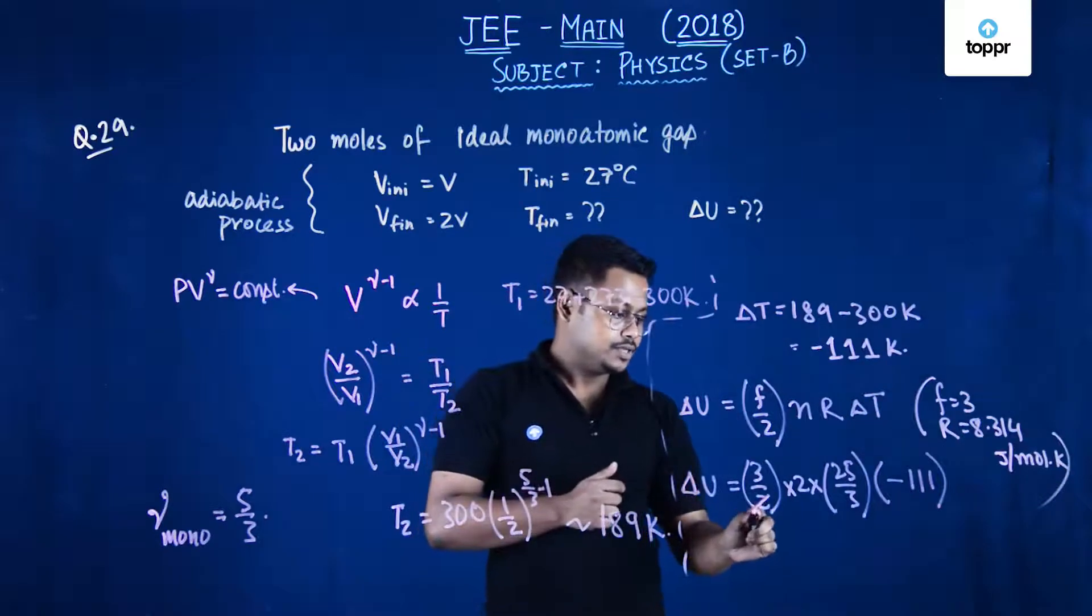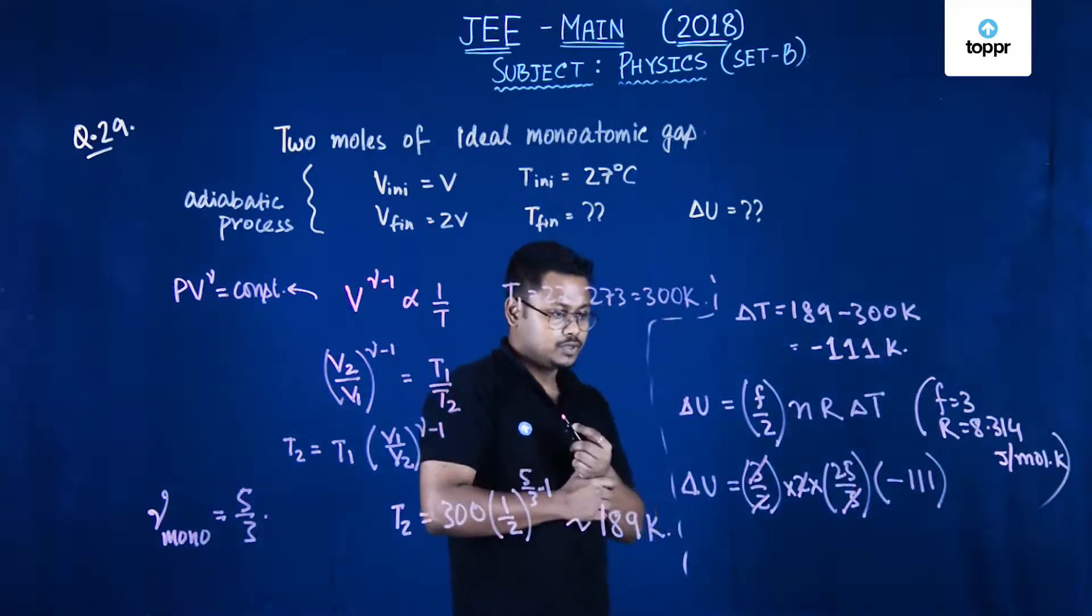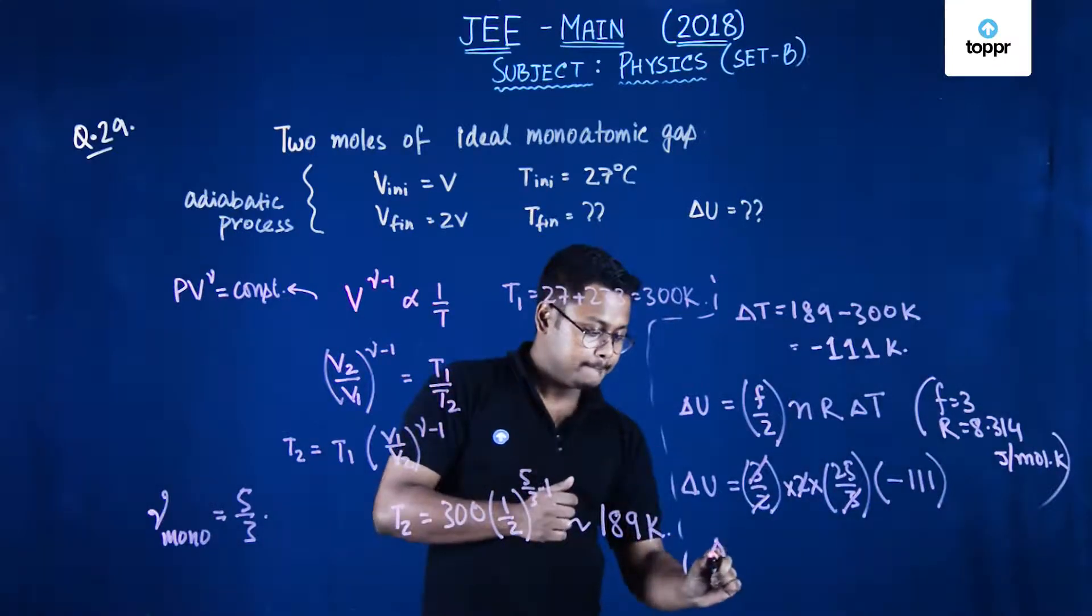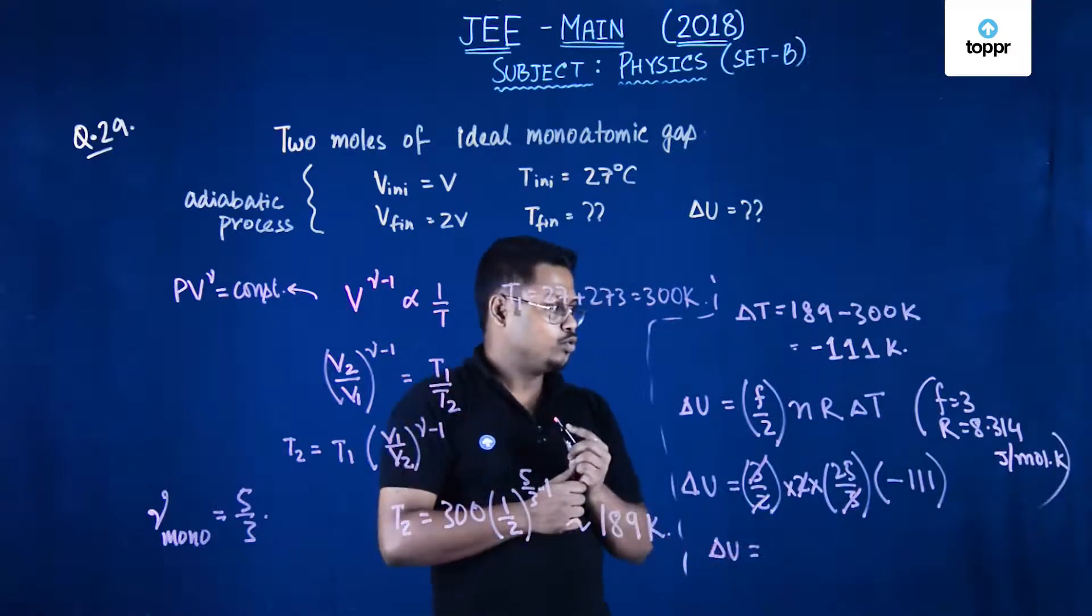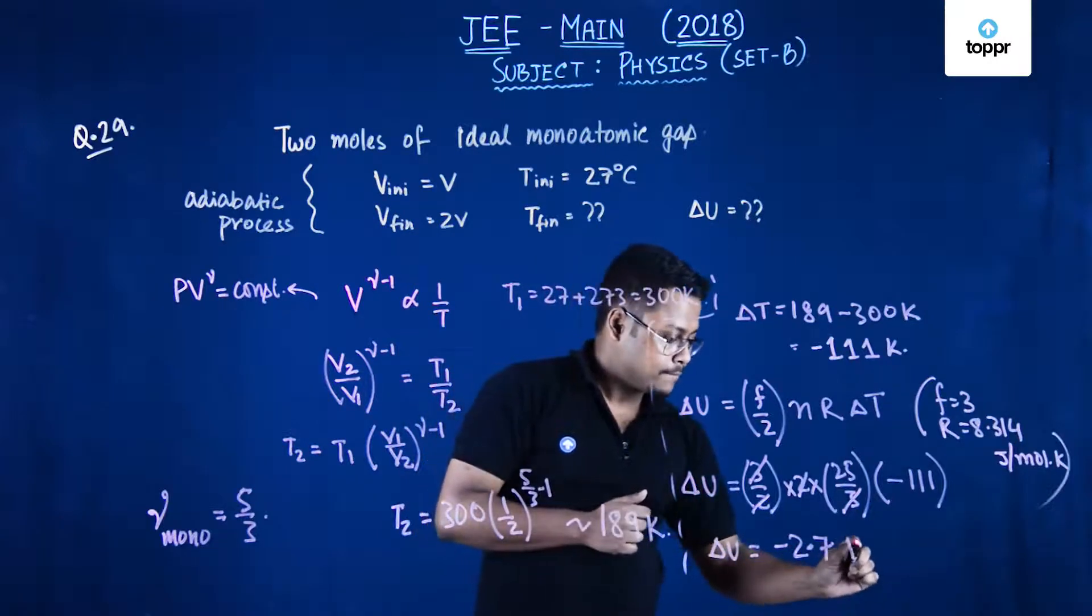So this 3, this 3 gets cancelled, this and this gets cancelled. So if you just multiply, delta U will turn out to be around minus 2.7 kilo joule.